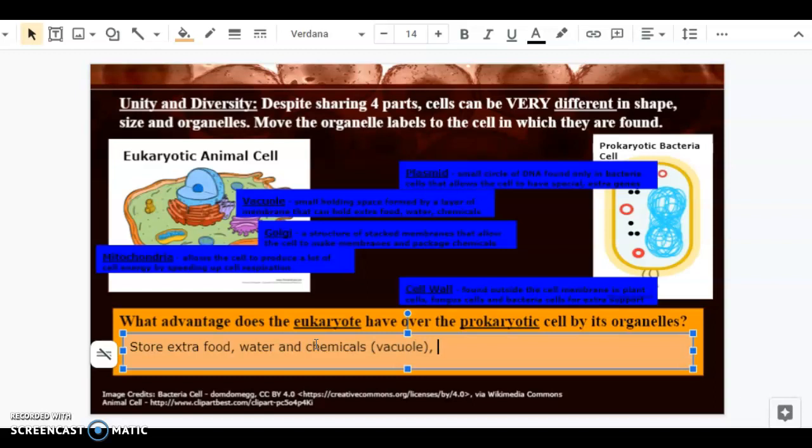The Golgi allows it to make membranes and package chemicals. That's important if a cell needs to send chemicals somewhere. And the mitochondria allow it to speed up respiration to produce a lot of energy.